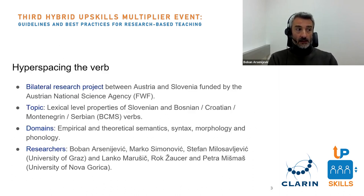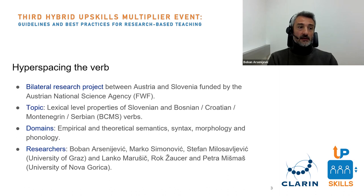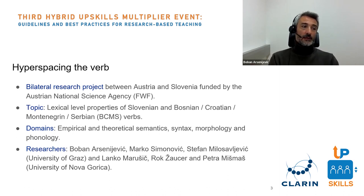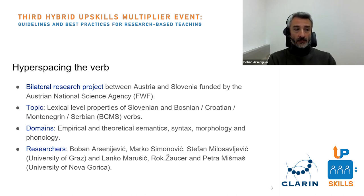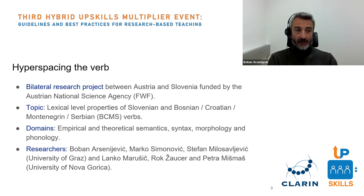The project we use for this is a research project titled 'Hyperspacing the Verb' — a bilateral project between Austria and Slovenia. The topic concerns lexical-level properties of Slovenian, Bosnian, Croatian, Montenegrin, and Serbian verbs. The domains are empirical and theoretical semantics, syntax, morphology, and phonology.